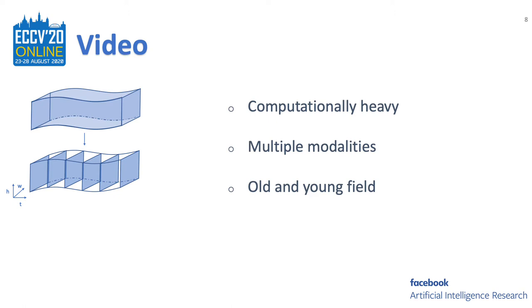A unique property of video compared to image is that video is able to carry more modalities. For example, video could carry modalities like RGB, optical flow, or audio information, which suggests that a codebase with the ability to process multi-modality information will be highly valuable.